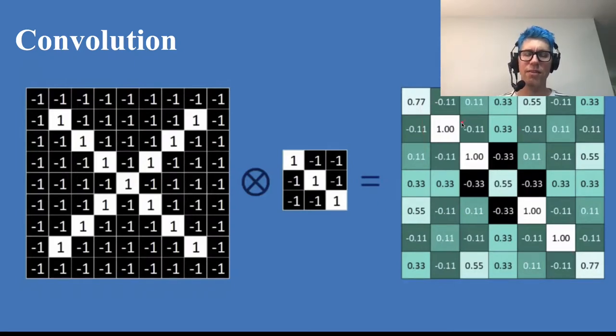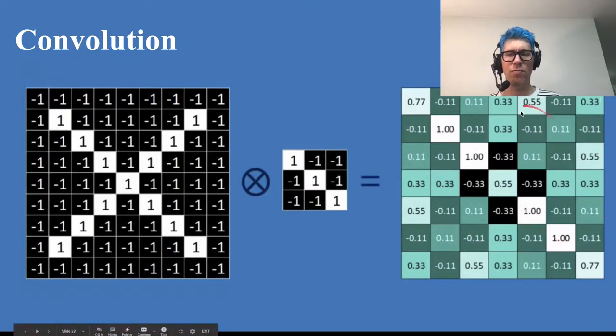So this is the result of the convolution. Now what does it tell us? It basically means that feature here is very strongly present here and here and here and here, somewhat present in certain other places, and really not present anywhere in those areas.